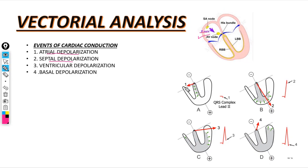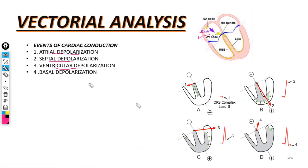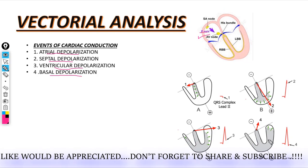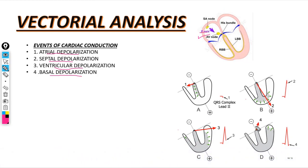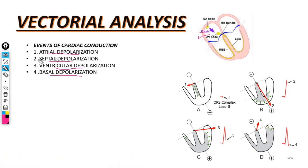Septal Depolarization occurs from the left side to the right side, slightly downwards. It occurs from the left bundle branch, therefore it is from left side to right side. Ventricular Depolarization occurs from above downwards and from endocardium to epicardium. Due to the very muscular left side of the ventricle, it is slightly deviated to the left side, and in the late phase of ventricular depolarization it is to the left side. Basal Depolarization is directed upward, occurring in the last depolarization phase.